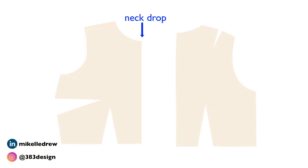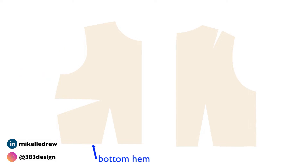I want to start with a bodice pattern because I think that's one of the ones that look the craziest if you're not familiar with what a pattern looks like. Here is a basic front and back bodice — not really what you'd expect. Starting from the top is the neck drop, the shoulder, armhole, side seam, and bottom hem. And those parts that look like pizza slices — those are darts.